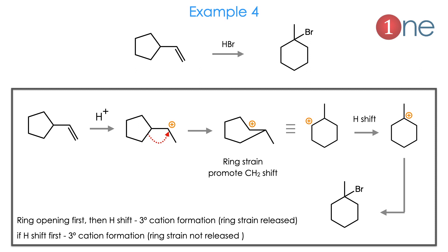The fourth example: wherever cation forms, rearrangement can occur. Here an exocyclic double bond is present on a cyclopentyl system, but the product is 6-membered. First, H+ attacks by Markovnikov addition on the terminal carbon, placing positive charge on the secondary system. Even though it is secondary, ring strain is present. To relieve the ring strain, the methylene group migrates to form a 6-membered system. Then a hydride shift occurs to create the stable tertiary cation, and bromine attaches to give the final product — a cyclomethyl bromide. The hydrogen shift after ring expansion is more effective since it relieves ring strain.